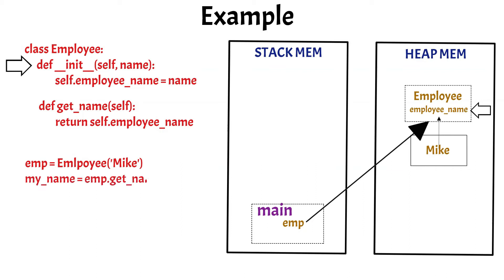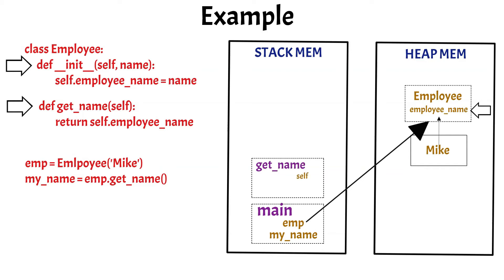For example, if we write: my_name = emp.getName(). This will invoke the instance method. The moment this line of code is executed in the main stack, the my_name variable will be created in the main stack, and a new stack is created over the main stack for the getName method in the stack memory. The variable self will be created in the getName stack as the object reference to the employee object stored in the heap memory. Using this self-reference in the stack memory, which is pointing to the employee object in heap memory, we can point to the instance variable employee_name, and the value Mike can be accessed. This value will be stored in the my_name variable in the main stack.